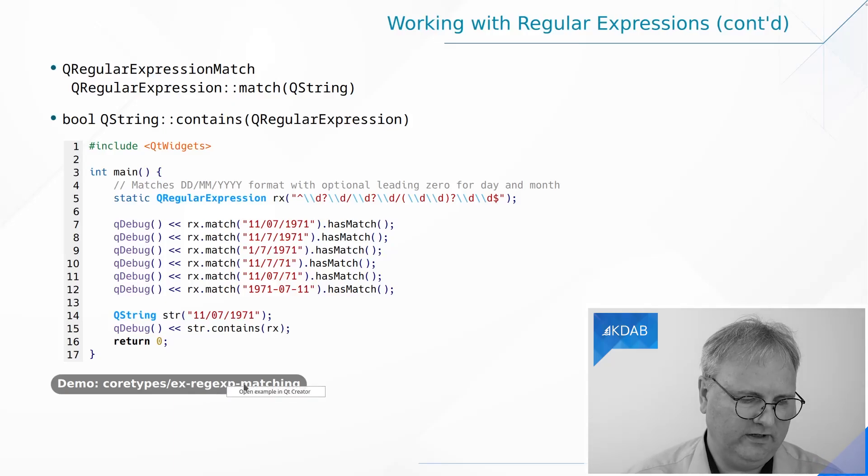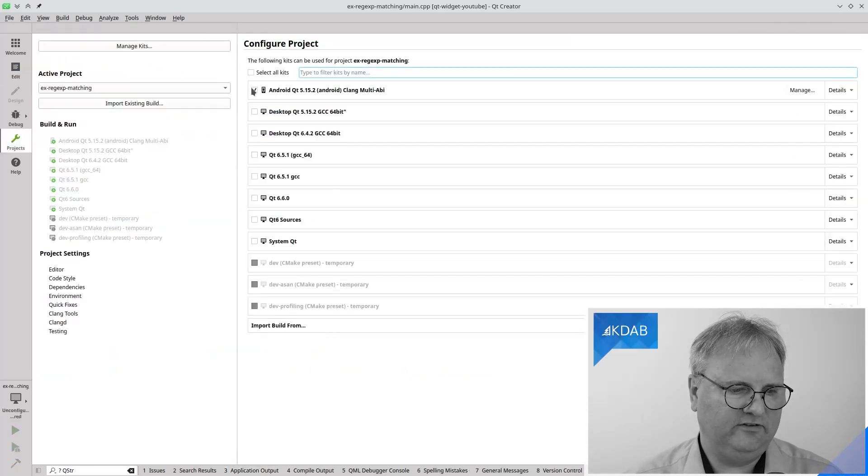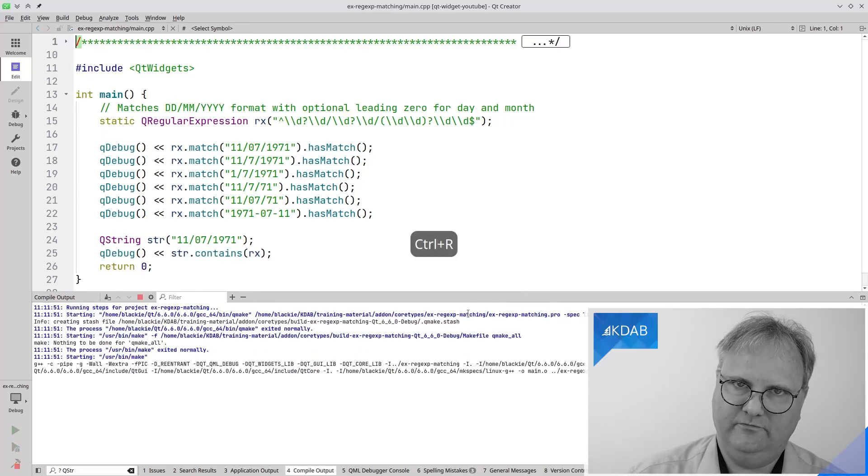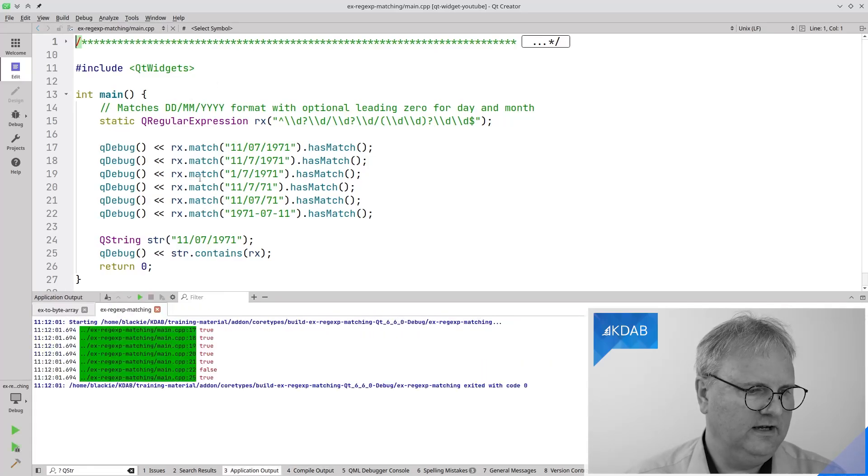Let me show you the code running here, just so that you trust it actually works for me. Here's the code. We can run it. Compile it first, obviously. And while we're compiling, let's just look through the code here. It is a complete application that uses QDebug to stream out the answers, and here is now it being run. A number of trues and a false and a true again. The last true, that matched 1971-07-11, which happened to be my birthday, just in case you want to send me a birthday gift.